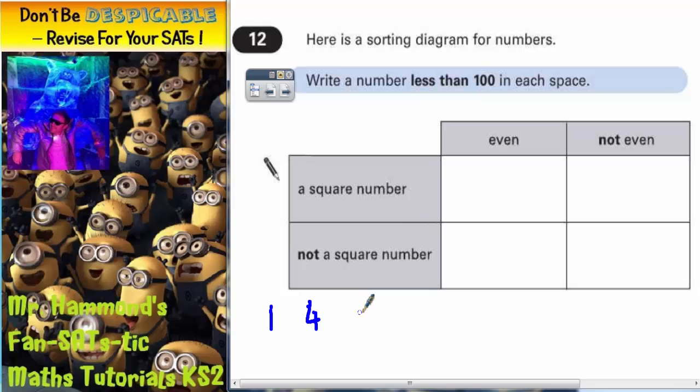3 times 3 is 9, 4 times 4 is 16, 5 times 5 is 25, 6 times 6 is 36, 7 times 7 is 49, 8 times 8 is 64, 9 times 9 is 81 and 10 times 10 is 100.